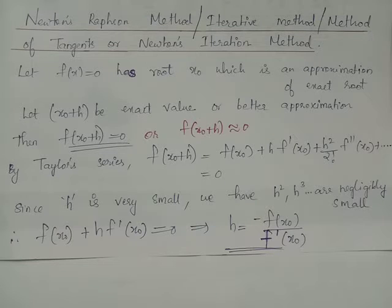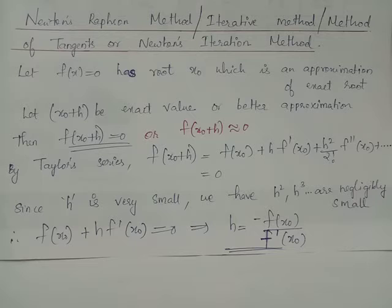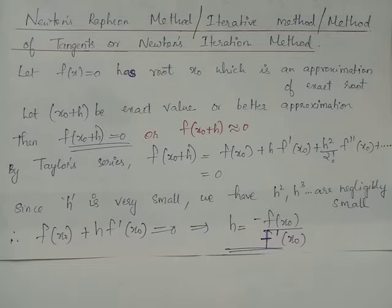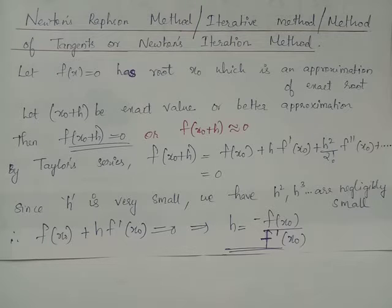Suppose alpha is the exact root of the equation f(x) = 0. Consider x0, which lies in the neighborhood of the root alpha, or equivalently, x0 is an approximation to the exact root alpha. If h is a very small quantity, then x0 + h will either give a better approximation to the root alpha, or x0 + h may coincide with alpha itself.